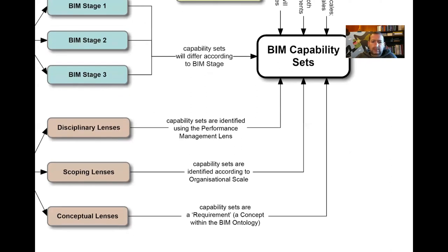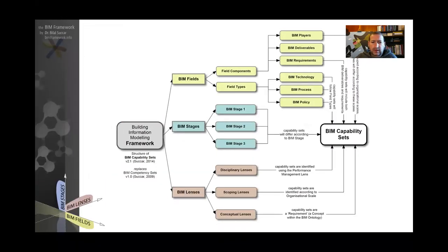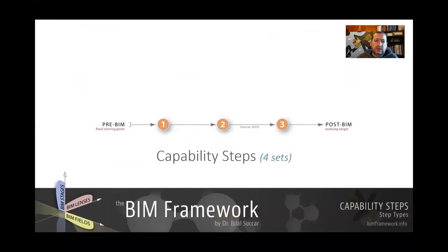Let me zoom out a bit and explain this in a different way. This is the stages from pre-BIM to post-BIM. We've got modeling stage one, collaboration stage two, and integration stage three. Now, if a company wants to go from pre-BIM to post-BIM, they have to go through stages, but these stages are revolutionary. Moving from one to another is a major effort.